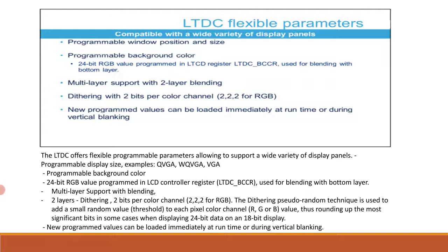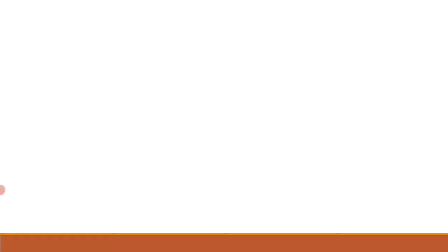Looking at the block diagram, we have an APB interface and an AXI interface. The APB interface handles configuration and status registers. Synchronous timing generation, blending, and dithering happen in one block. The AXI master interface connects to a FIFO, with layer one and layer two, then blending occurs. Output signals include LCD clock, HSync, VSync, DE, and RGB[7:0] going to the LCD panel.